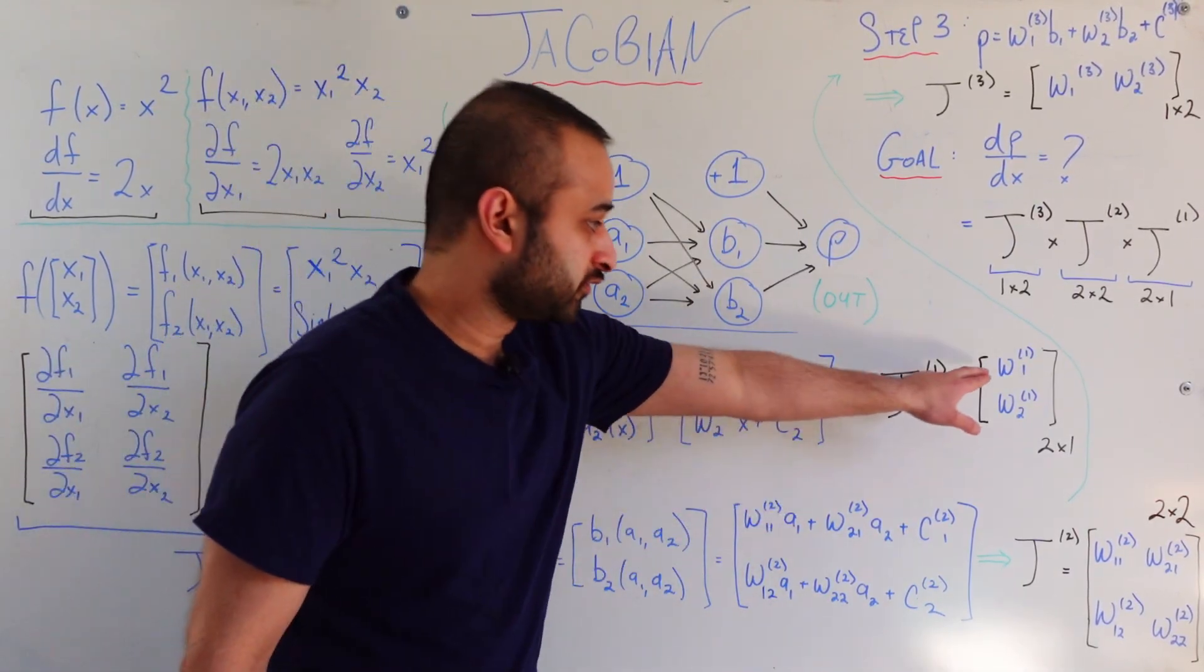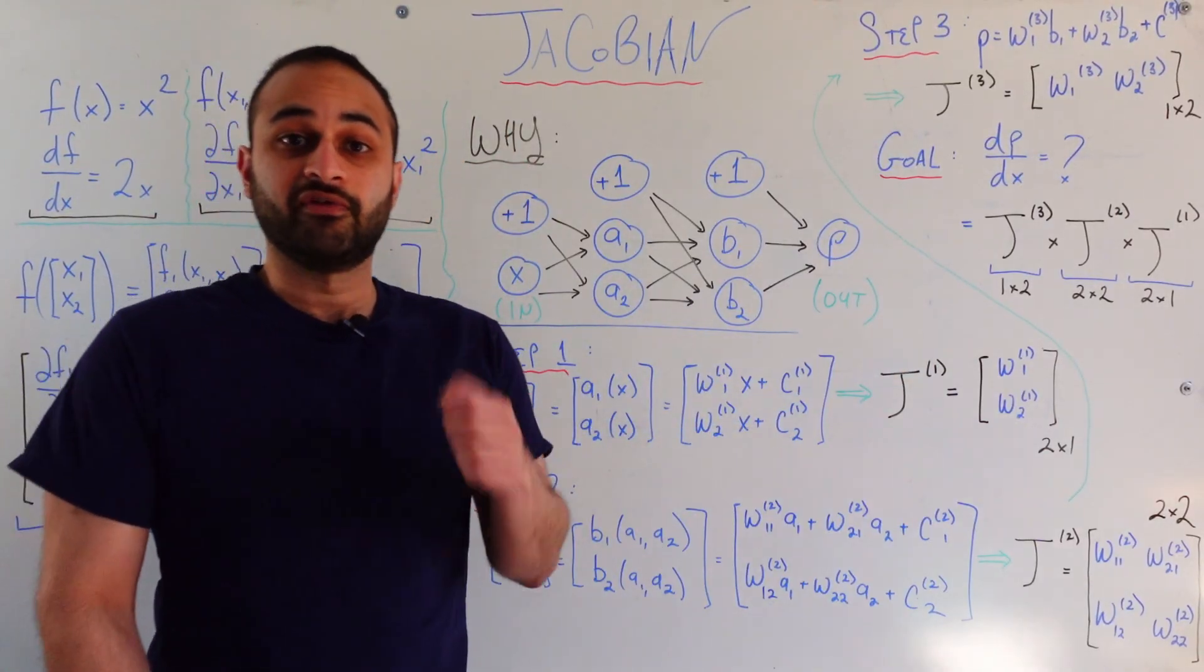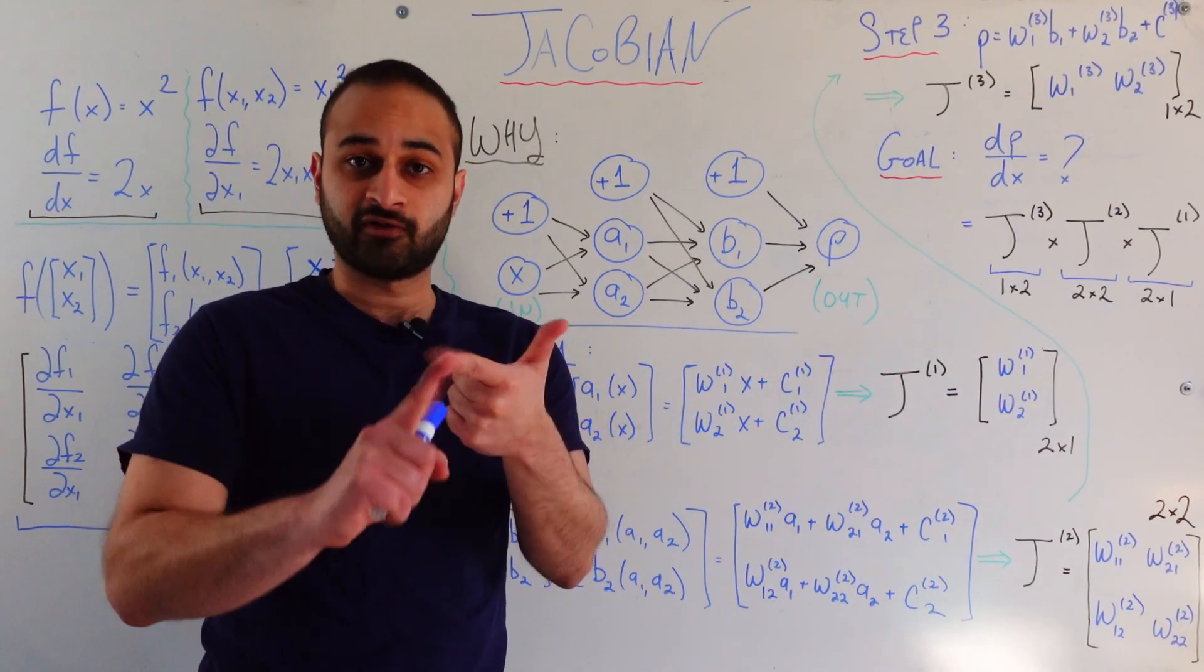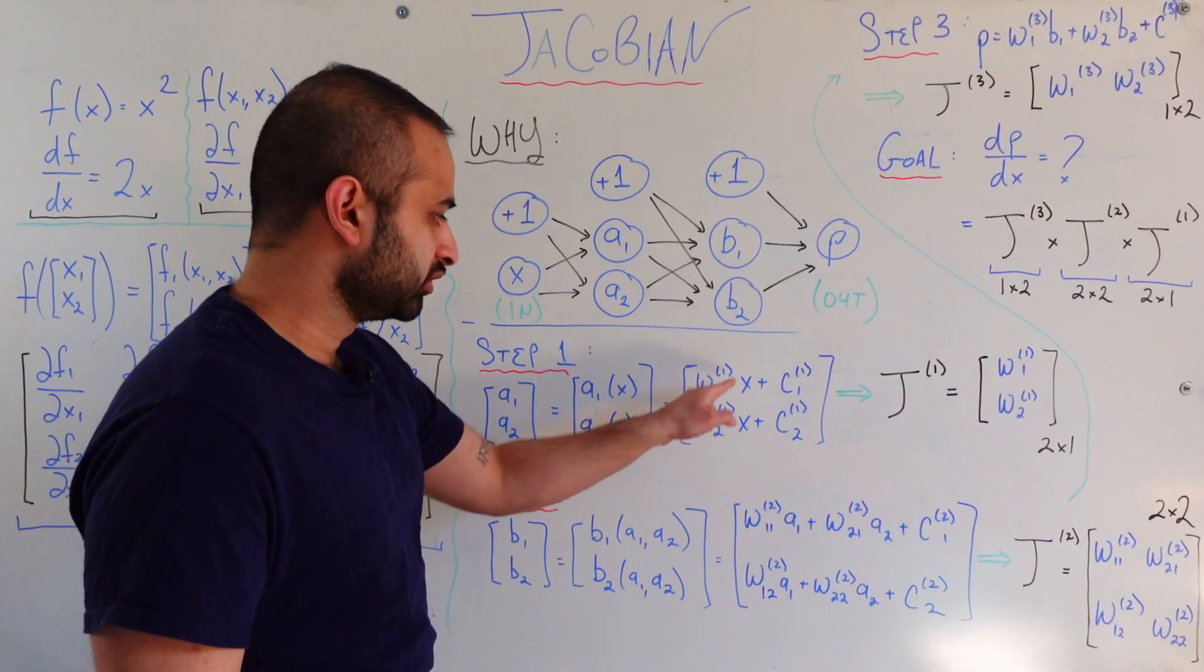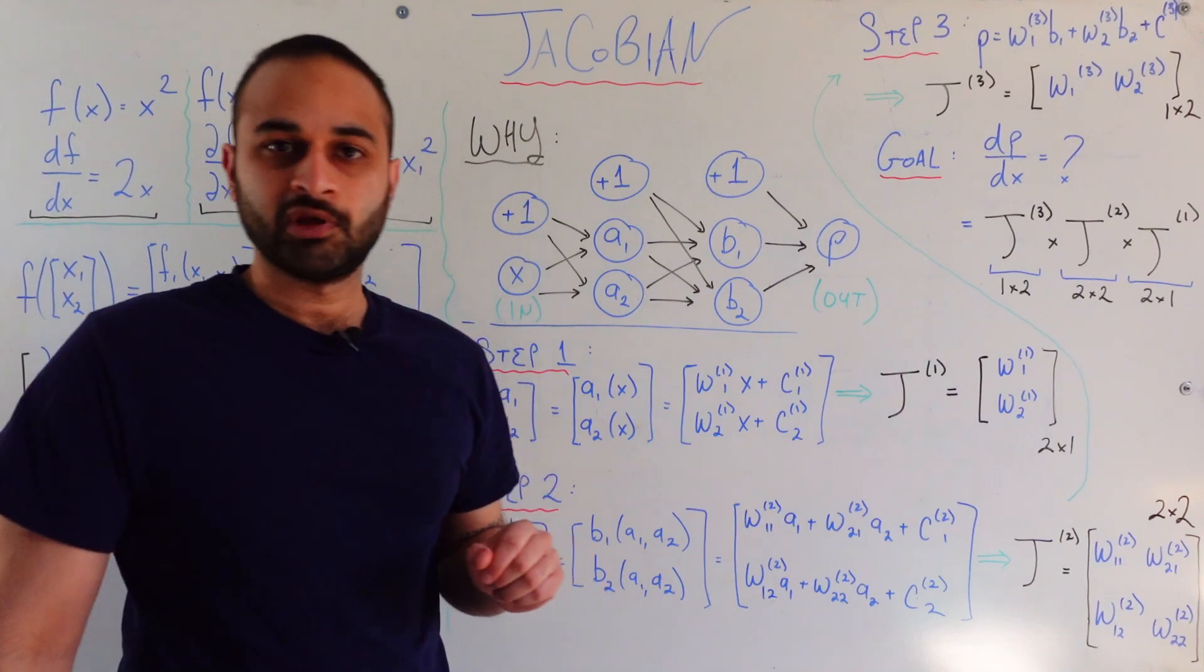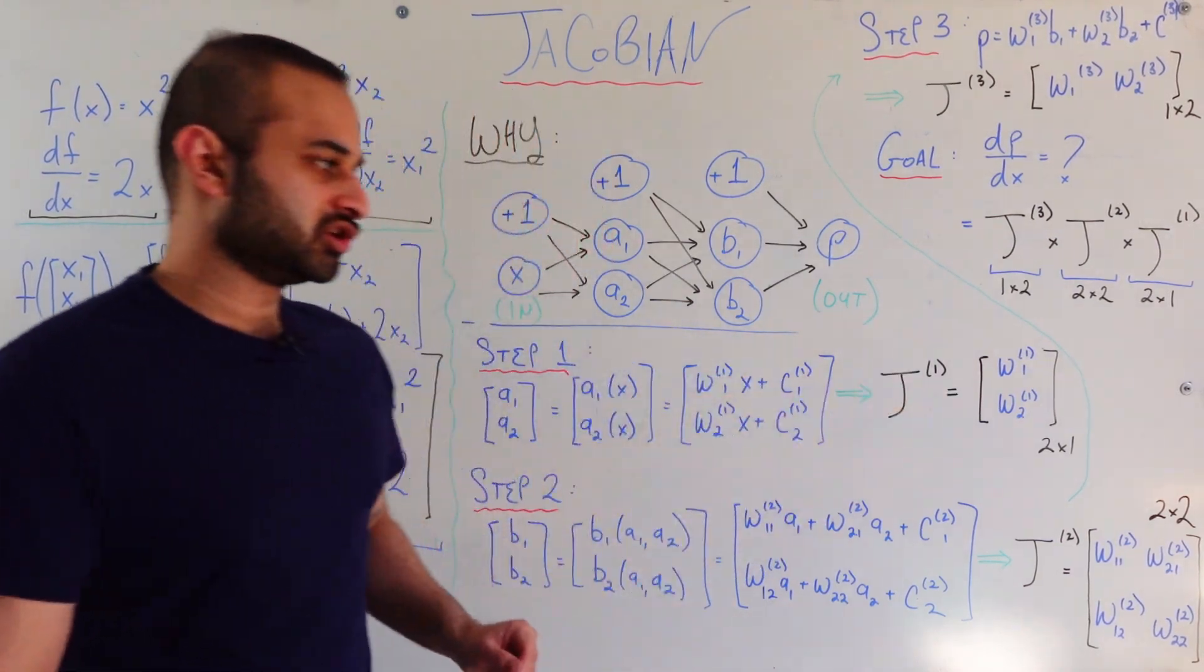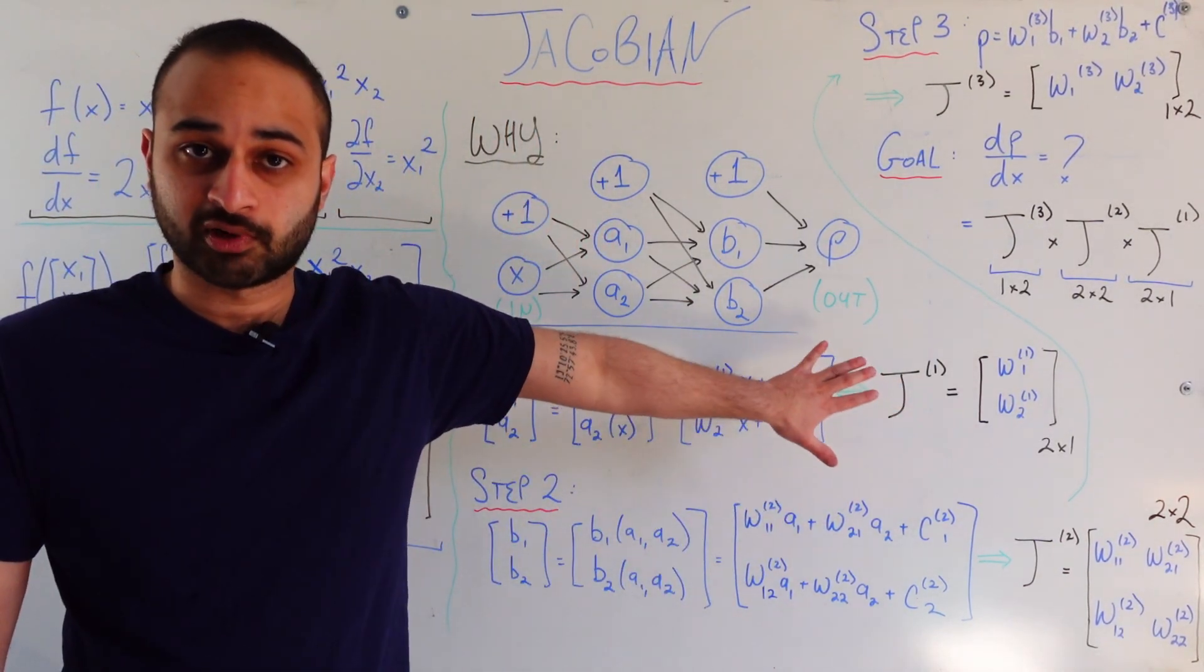So explicitly how we get this first number is we take the derivative of the first function with respect to the first and only variable. So that's the derivative of this guy with respect to x, that's simply just this coefficient term here. Exact same thing for the second coefficient term here, so that's the Jacobian of the first part of the process.